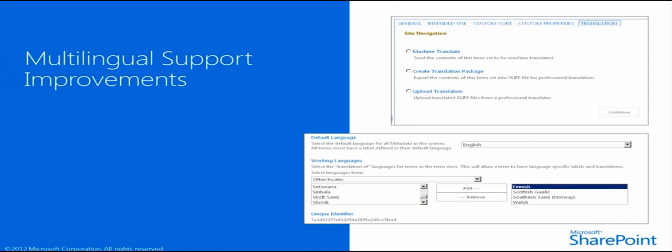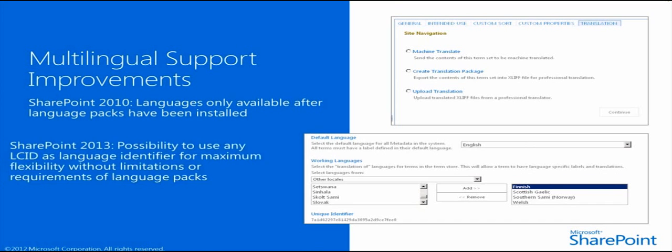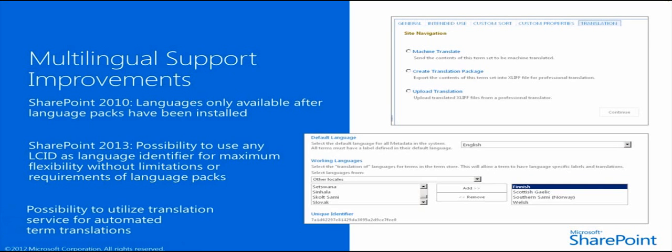We also mentioned the multilingual support improvements. In SharePoint 2010, these languages were only available after language packs were installed, so you could only do translated terms for languages that had language packs available. In SharePoint 2013, we can use any standard language ID as the language identifier for maximum flexibility, without the requirements of language packs. We can select from more than 100 locales or .NET standard locales, and we can use machine translation to automatically create translations for these terms, as long as the cloud-based machine translation service supports the particular language.